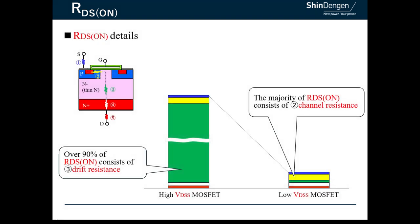In high voltage MOSFETs, more than 90% of RDS(ON) is caused by drift layer resistance. Therefore, the development of high voltage MOSFETs focuses on lowering the resistance of the drift layer.